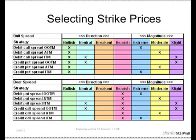Now, this is a little table that I put together that is helpful in deciding what strike prices to choose. If you're bullish, you have two choices: you can do a debit call spread or a credit put spread, but that doesn't help decide which strike prices to choose. Many indexes have strikes every dollar and some every two and a half dollars, so there are many different strikes to choose from. You decide on your strike prices based on your level of bullishness.